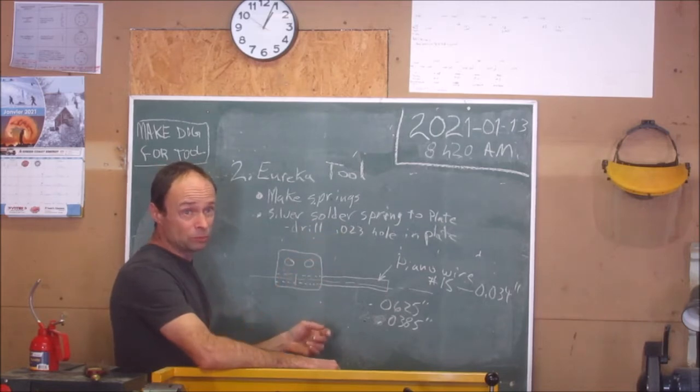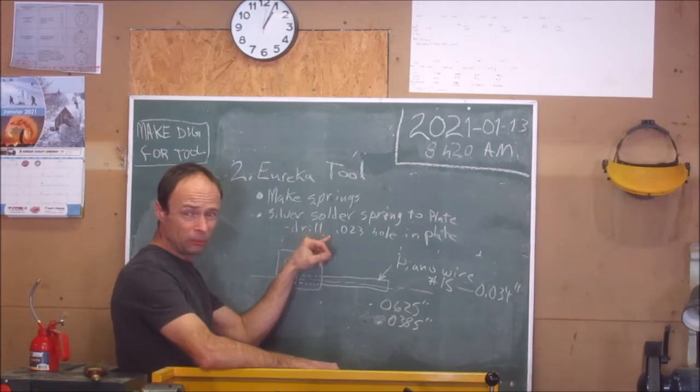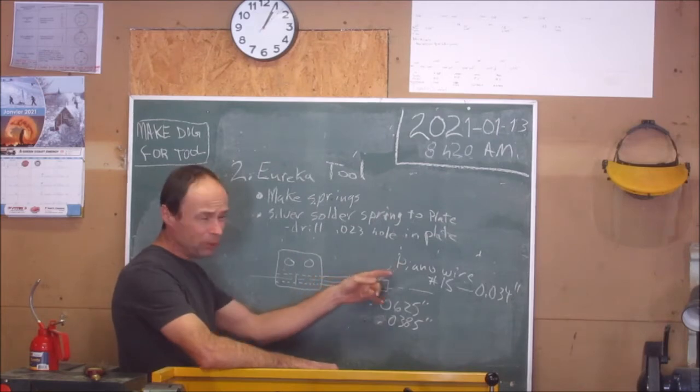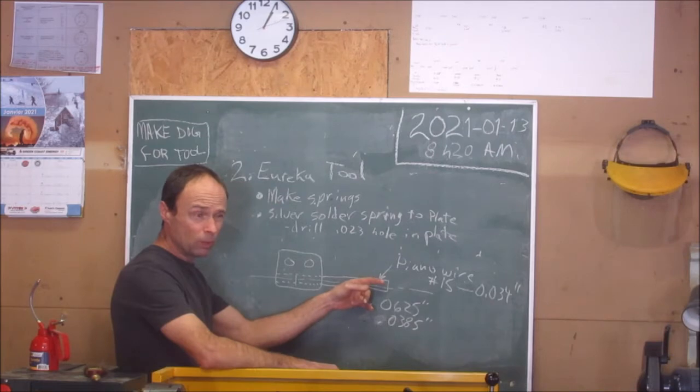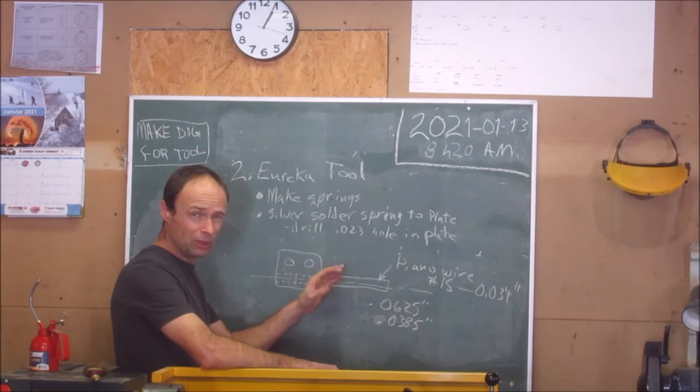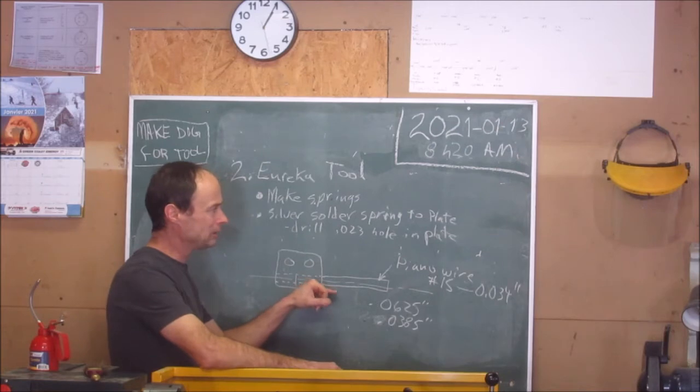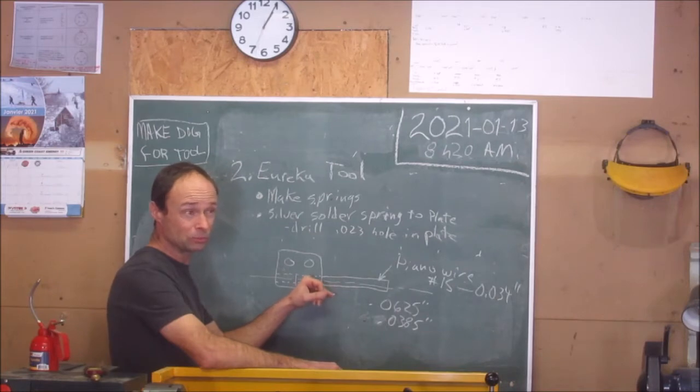It was number 38. Even though the wire is 34 thousandths, it does slip in there. I'm either going to silver solder that or just plain old solder. Silver solder would probably be better, but I'm afraid of changing the characteristics of the spring or the piano wire.